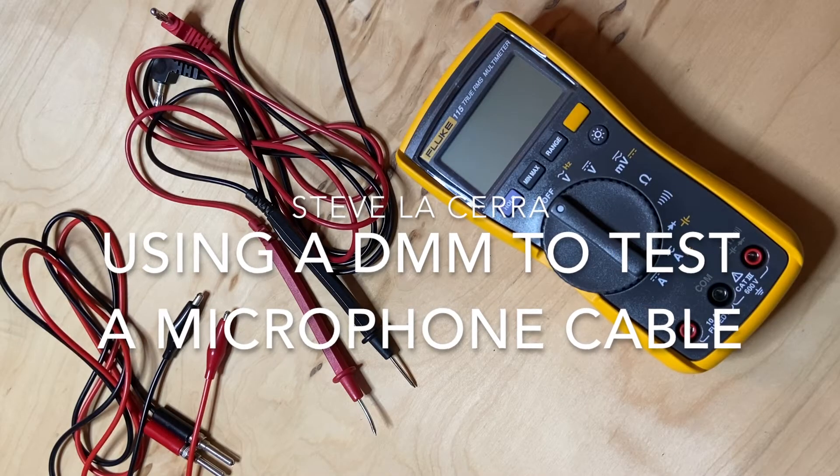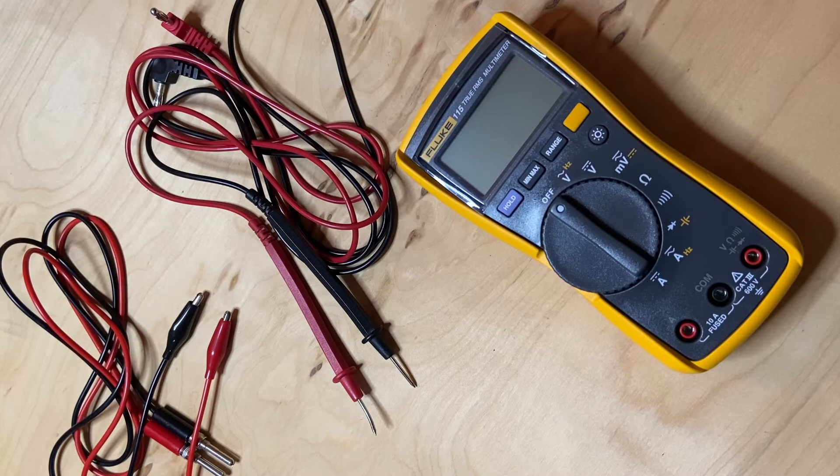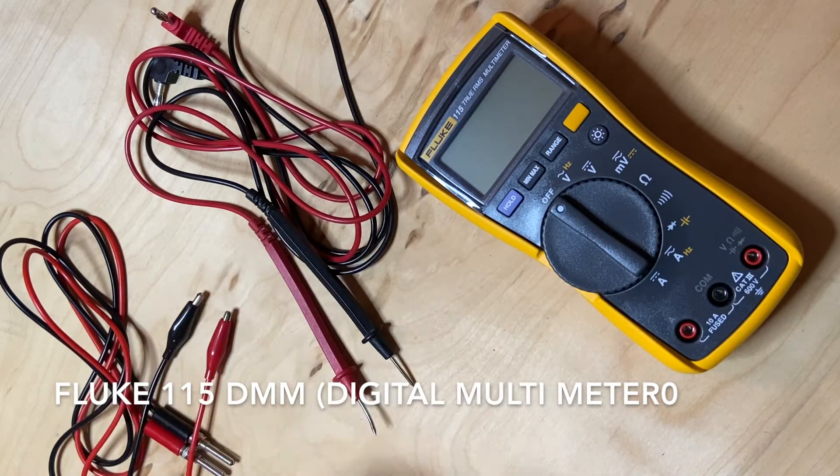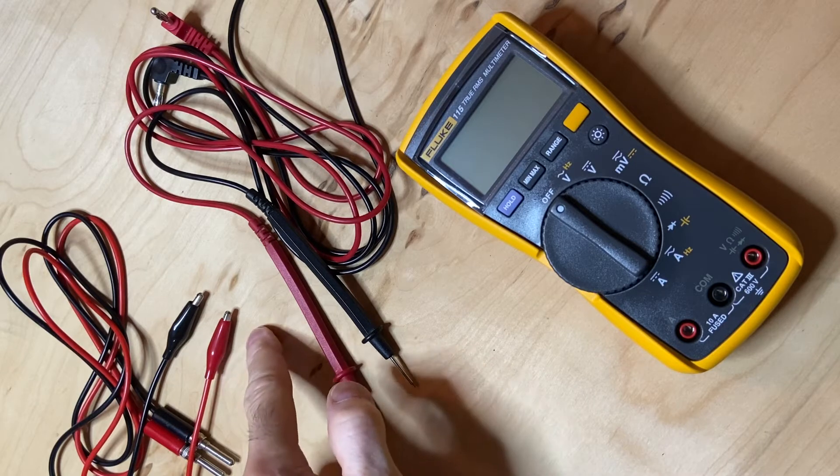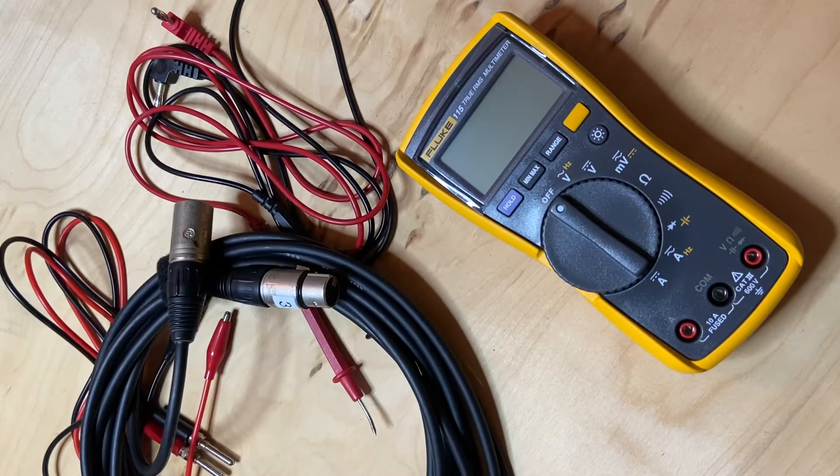Hey guys, Steve Lissera here. Today we'll learn how to use a digital multimeter to test a microphone cable. We have a Fluke digital multimeter here and two sets of test leads. One set has probe tips and the other set has alligator clips. And then of course we have a microphone cable.